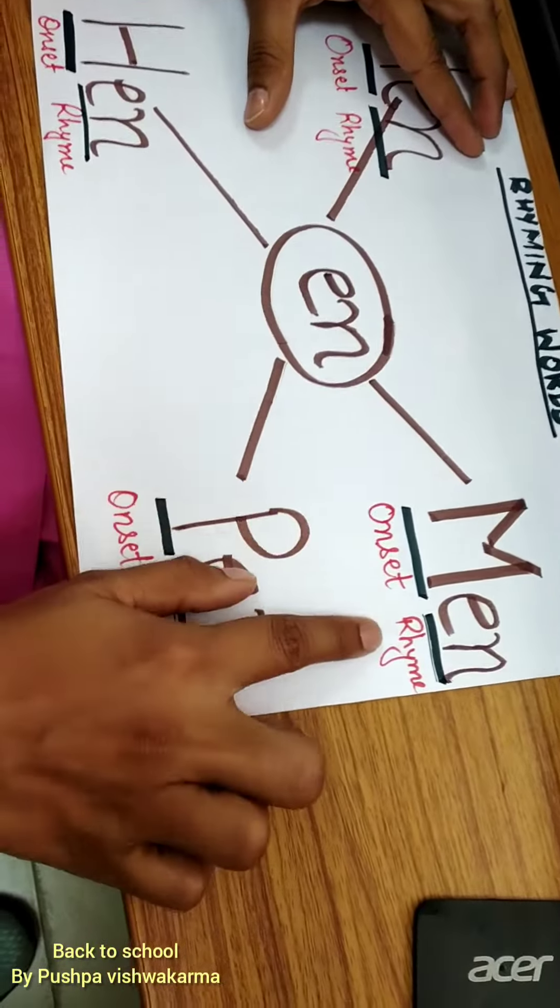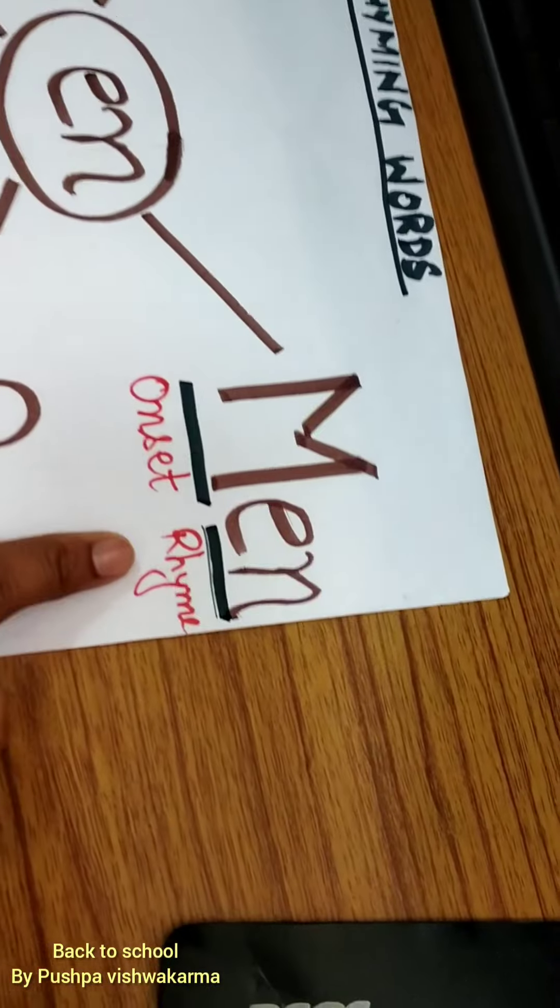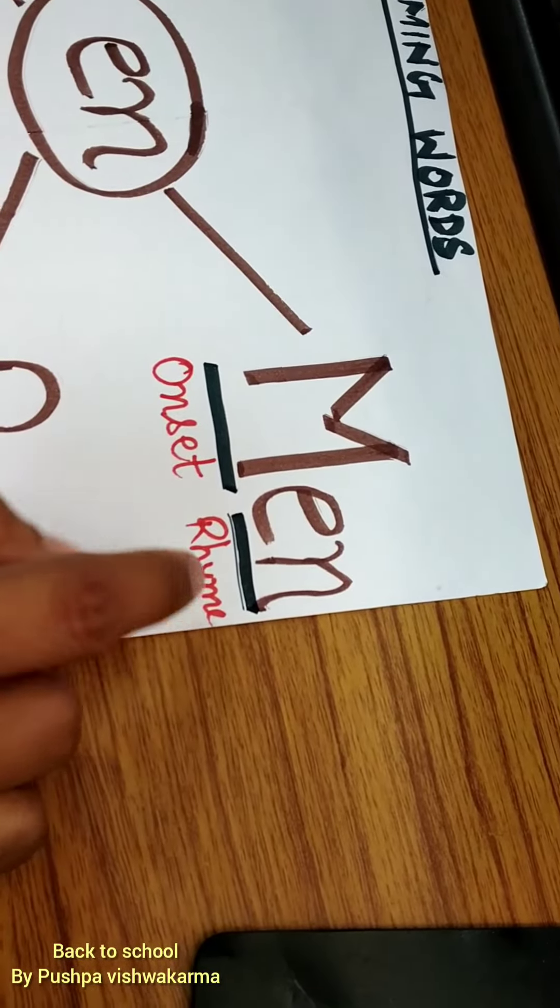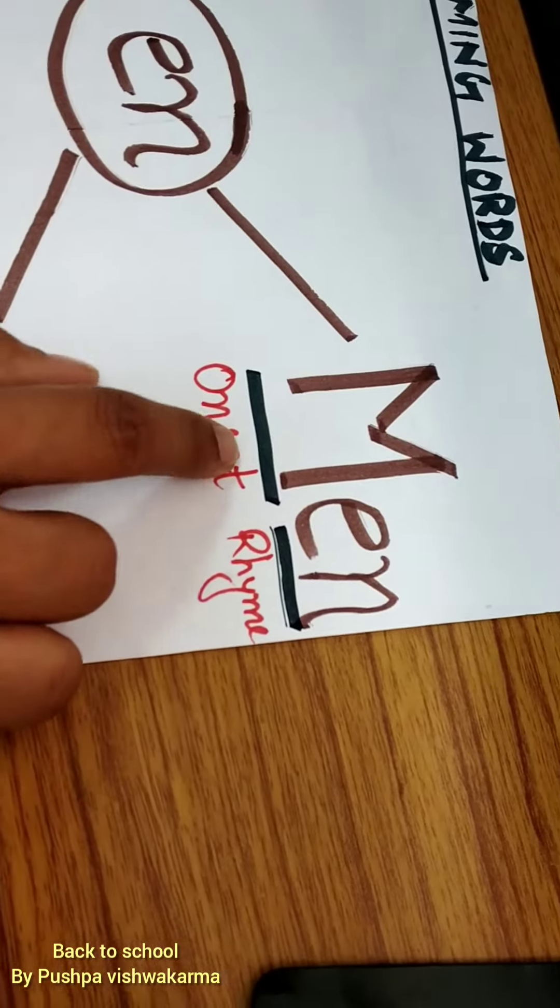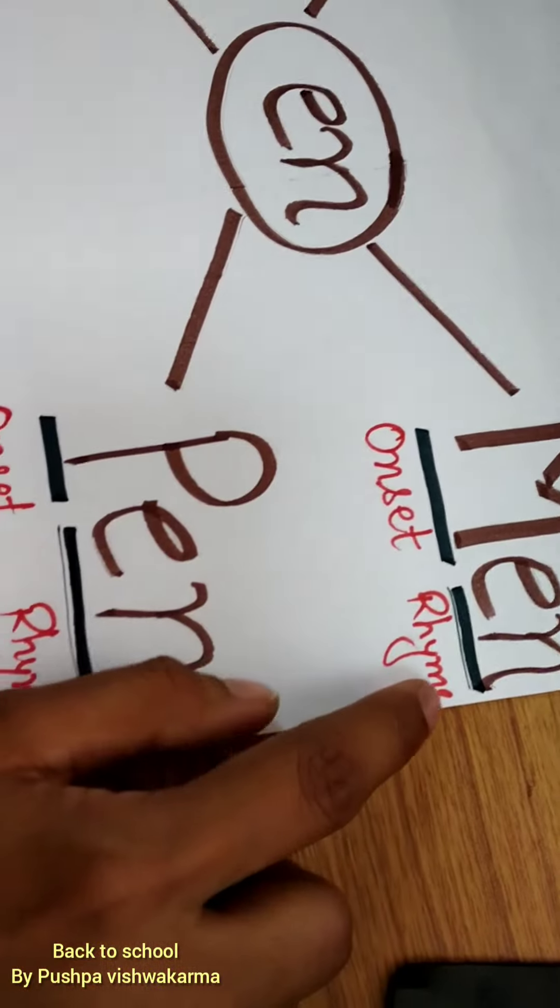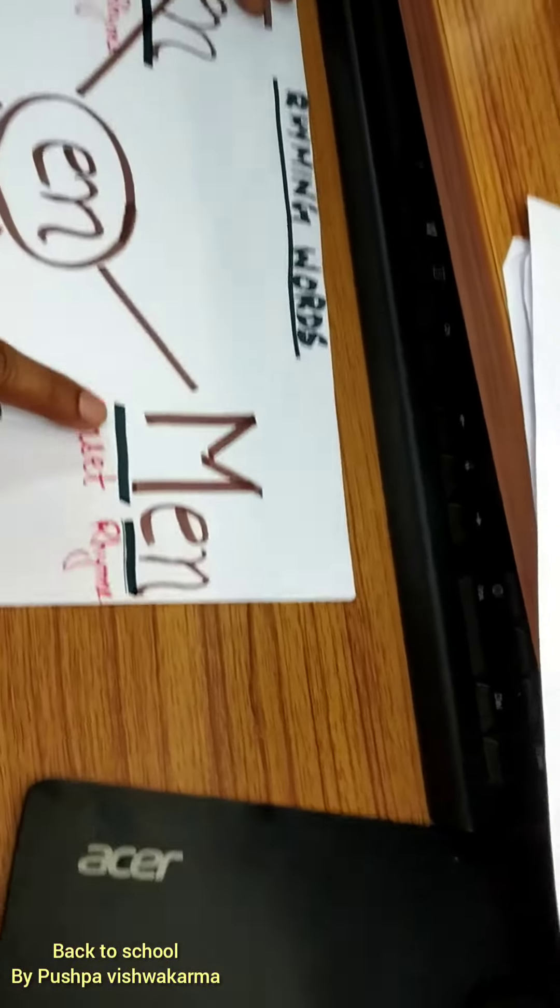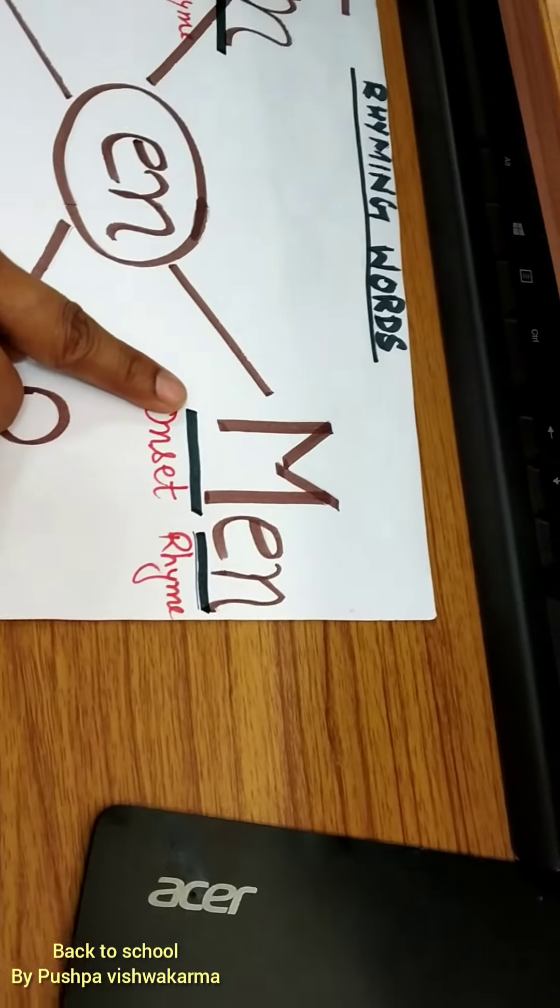So, here is a word written over here: men. In this word, N is rhyme and M is onset. Okay, the ending sound is rhyme and the first letter here is onset.